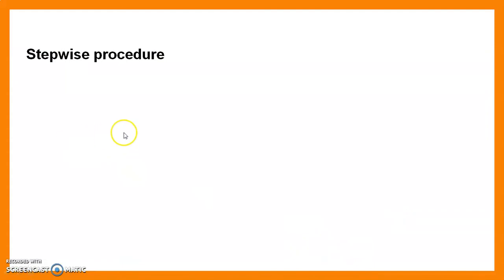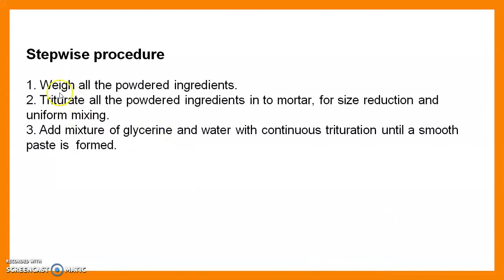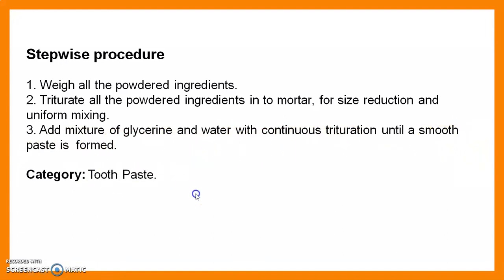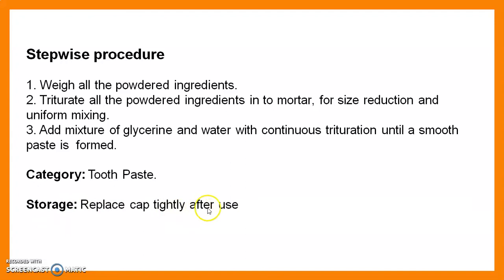The stepwise procedure: first, weigh all powder ingredients. Then triturate all powder ingredients in a mortar for size reduction and uniform mixing. Next, add a mixture of glycerine and water with continuous trituration until a smooth paste is formed. The category of today's preparation is toothpaste. Storage condition: replace the cap tightly after use. Now we move to the laboratory for the practical session.